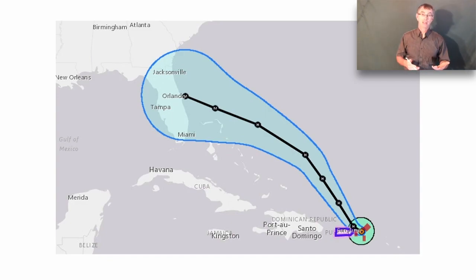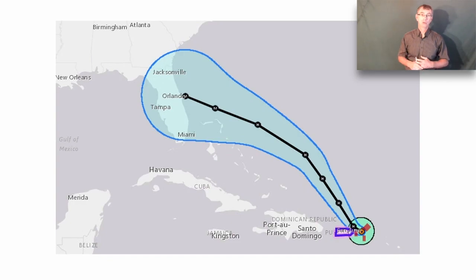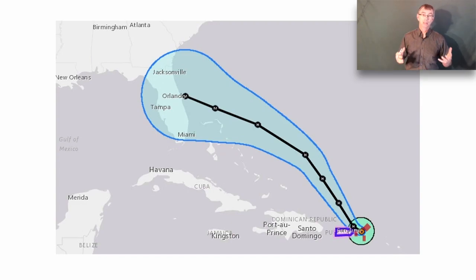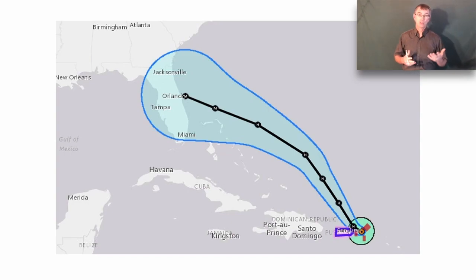We want to minimize that uncertainty because if you're not really sure where the hurricane is going to be, you may be having people prepare unnecessarily — boarding up their homes, driving away. You don't want to do that unless it's absolutely necessary. Plus you want to be able to prepare the regions that are going to be hit appropriately and focus your resources in the right place. Having a good understanding of uncertainty in your models is very important, especially in this application.